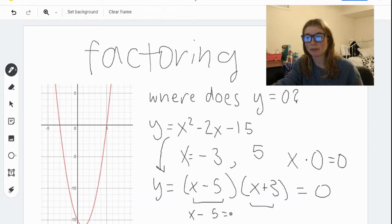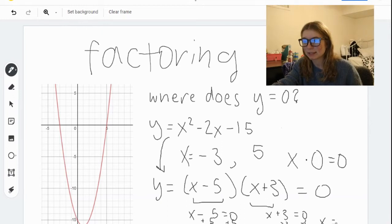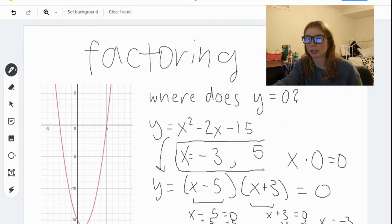So when x minus 5 equals 0, or when x plus 3 equals 0, the function evaluates to 0. You can add 5 to both sides, and you'll get x equals 5. At x equals 5, y equals 0. And you can subtract 3 from both sides to get x equals negative 3. These are the values we got originally from looking at the graph.